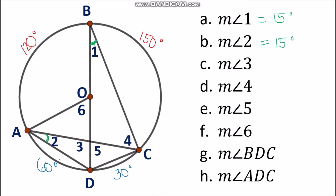Using arc AD, we can find the measurement of angle 6. Angle 6 is a central angle and its intercepted arc is arc AD. Applying Postulate 22, the central angle intercepted arc postulate, the measurement of arc AD is 60 degrees, so the measurement of angle 6 is also 60 degrees.